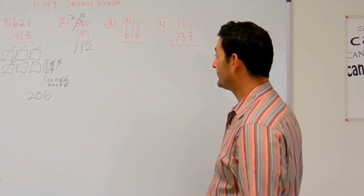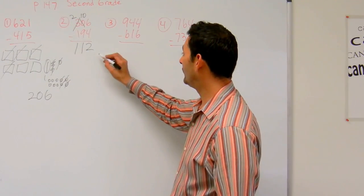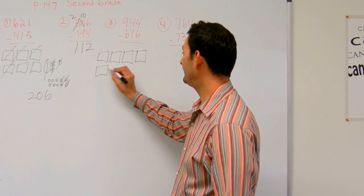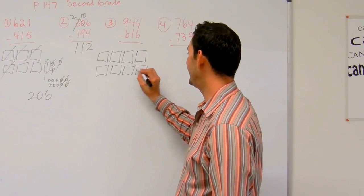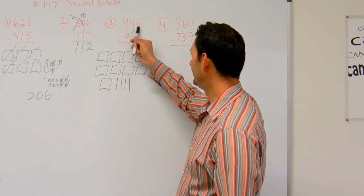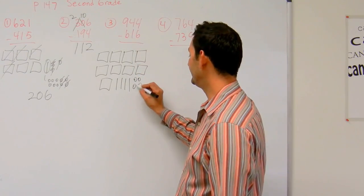Now let's take a look at number 3. Here I've got 944. I'll count it out: 900, 40, and 4.